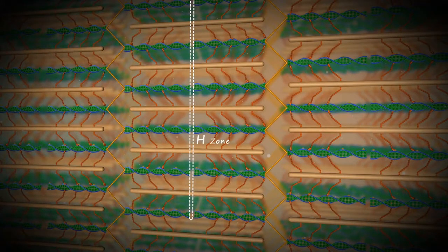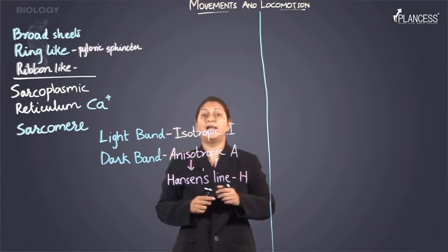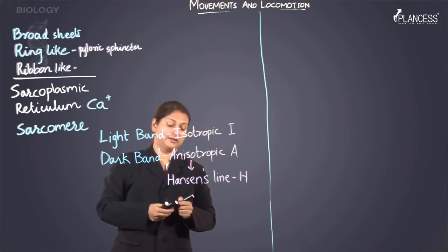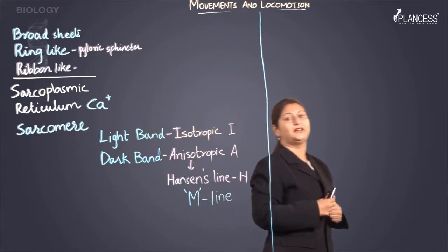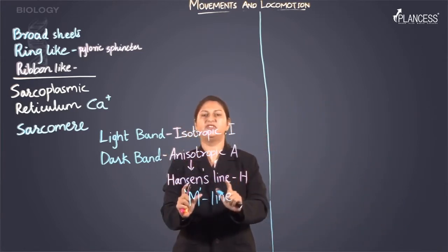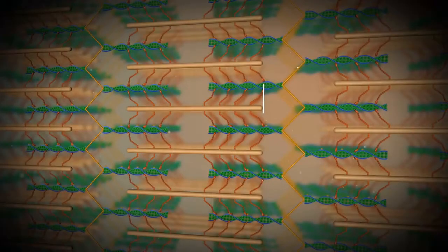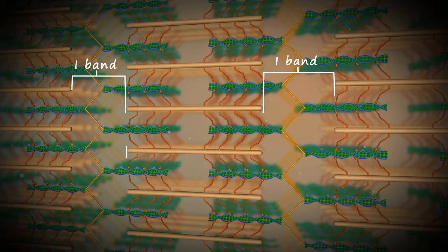The H zone occurs when the ends of the thin filaments move inside the A band. There is one more center provided to the H zone called the M line, which originates from a very typical German word. Moving on to the I band — the I band has very thin filaments, and the ends of the filaments are incorporated in one sarcomere. On one side of a sarcomere is an I band, on the other side again an I band, and sandwiched in between is the A band.